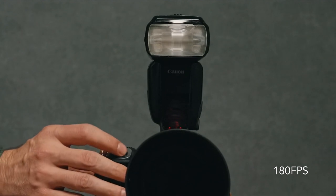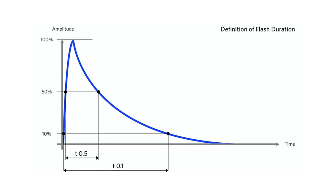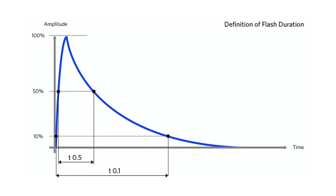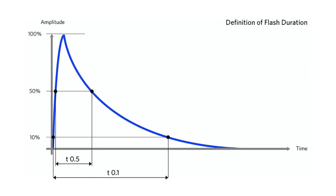Flash tubes emit pulses of light each time you take a photo, often with the burst being more intense in the beginning and then trailing off over time. The length of time that light is emitting from the flash is known as the flash duration. Flash duration can be expressed in two ways: T.5 and T.1. T.5 is when the pulse drops to 50% of its maximum, and T.1 is when it drops to only 10% of its maximum intensity.